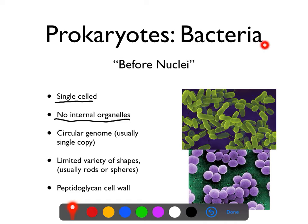Bacteria are prokaryotes, so they are single-celled and have no internal organelles. Bacteria usually have a circular genome — typically a single copy of a circular genome, meaning the DNA is wrapped in a circle and loops back on itself. Bacteria usually have a limited variety of shapes; they're typically going to be little spheres, like little dots, or little rods. Bacteria typically have a cell wall made of peptidoglycan.